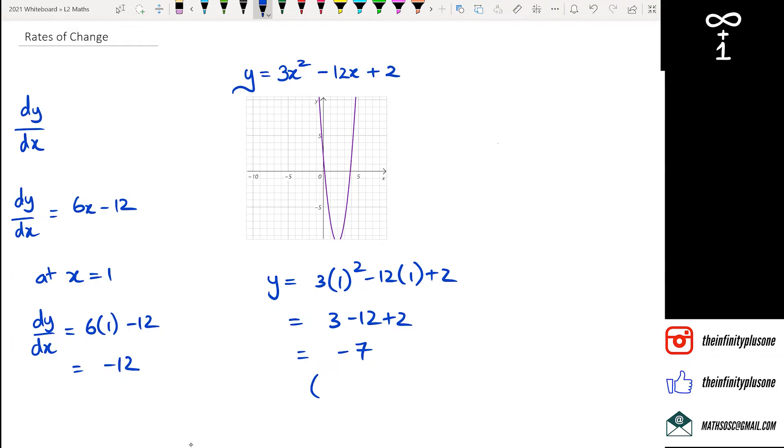So what I've discovered here is the actual point of (1, -7). So if you think about it, (1, -7) is right there. And if you think about the negative 12, the negative 12 is the rate of change when x equals 1. In other words, that negative 12 is the gradient at that point.